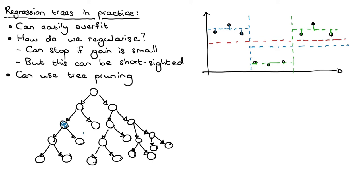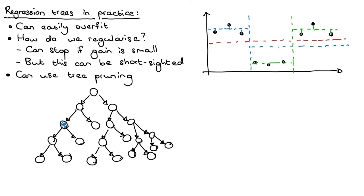Collapsing a node means taking all of its children, discarding all those leaf nodes, and creating a new leaf node that contains all the items that were assigned to those nodes — you bunch them all together. For each internal node you consider how much the loss will increase if you collapse it, and then you collapse the internal node that produces the smallest increase in the loss.